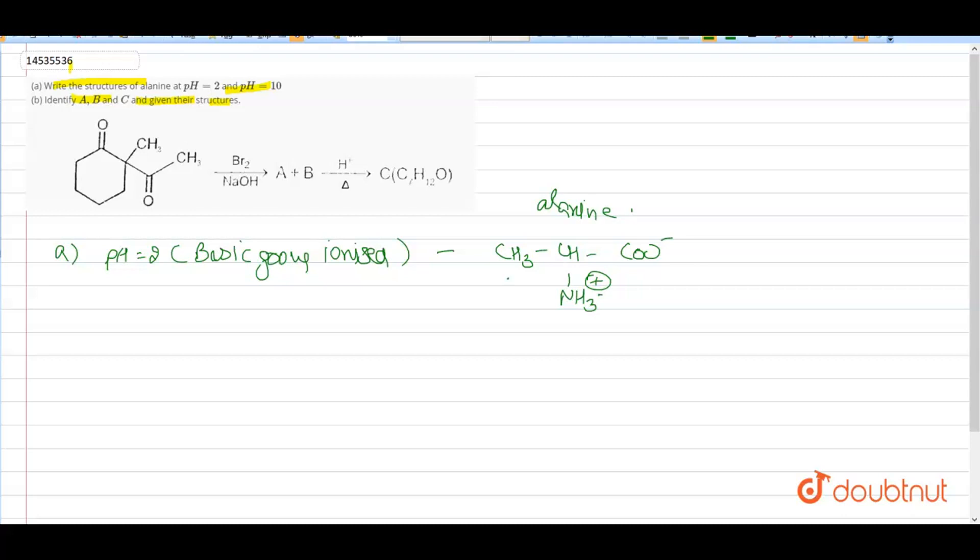And the structure of alanine at pH 10. pH equal to 10, acidic group is ionized. And structure becomes CH3-CH-COO- with NH2. Thank you.